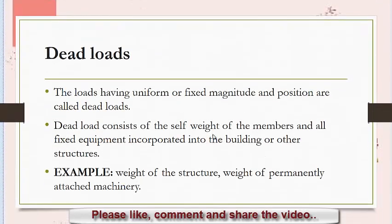The first type of load acting on the structure is Dead Loads. The loads having uniform or constant magnitude and position are known as dead loads. Dead loads consist of the self-weight of the members and all the fixed equipment or machinery incorporated into the building or other structures. Examples of dead loads can be weight of the structure, weight of permanently attached equipment or machinery.